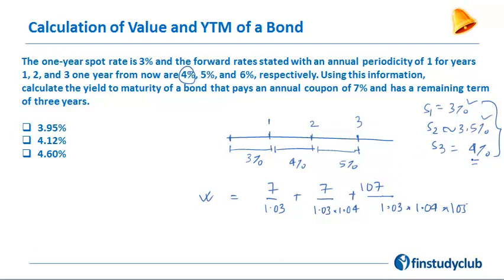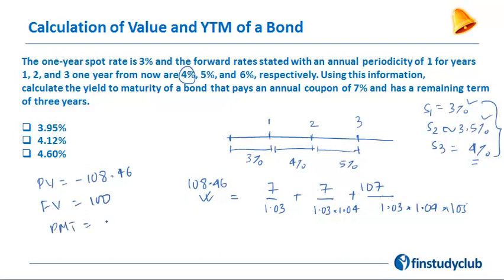That's a quick smart way of arriving at the YTM, though I wouldn't suggest that's how you go in the exam. In the exam you should use the tested approach: arrive at the value of the bond. So we get a value of 108.46. You put your calculator to use — PV is −108.46, FV is 100, PMT is 7, N is 3 — and compute I/Y. You get an answer of around 3.95%.